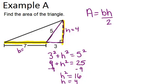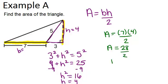So that means the area is going to be base 7 times height 4 divided by 2. So that gives us 28 divided by 2, or 14. And no units are given in this problem, so we can just say units squared. And for area, you always want to have units squared.